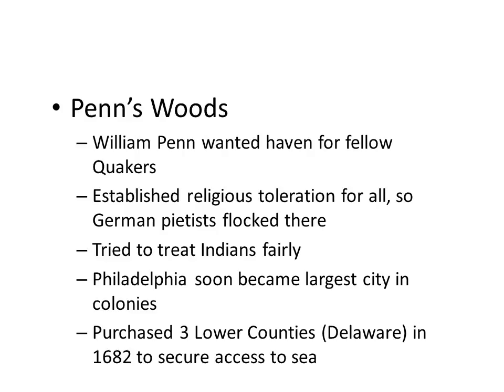William Penn is a man who convinces the king to give him a colony, but importantly, he belongs to a religious minority called Quakers, and they want to establish a haven for themselves there. Within the colony of Pennsylvania, he's going to establish religious toleration for all, so a lot of Germans are going to flock there to escape persecutions going on there. Within the colony of Pennsylvania, there is also an effort to try to treat Indians fairly. Philadelphia soon becomes the largest city in all the colonies, and it becomes very successful as a grain-growing colony.